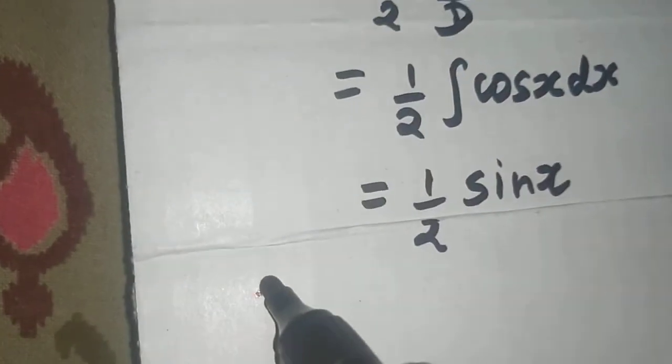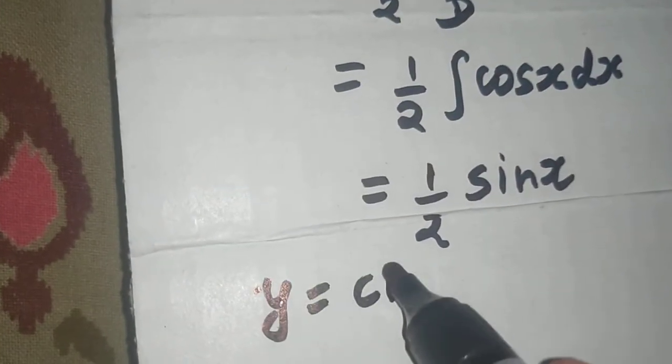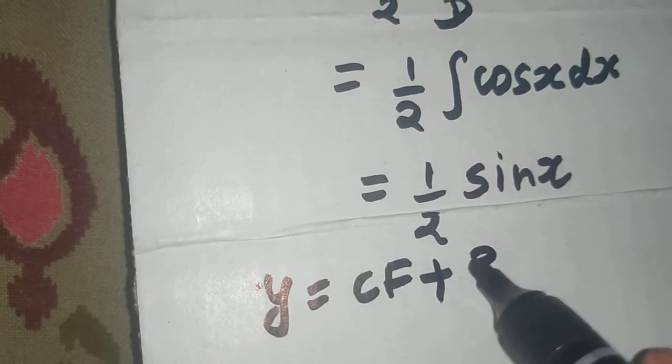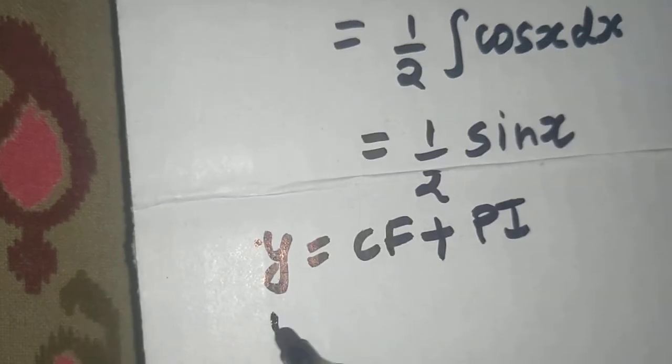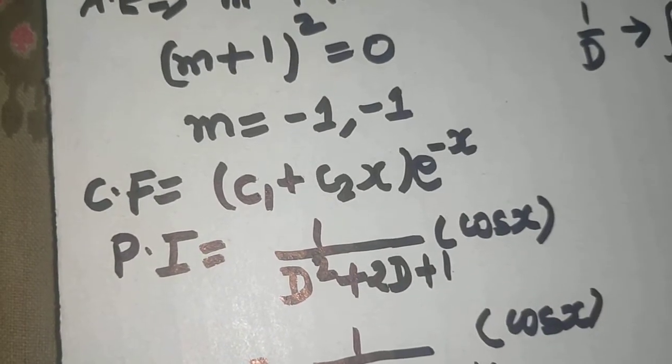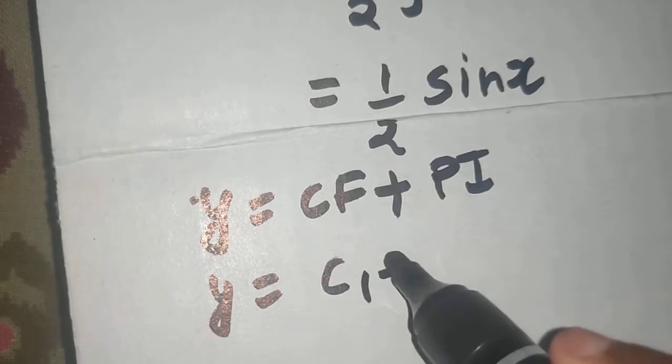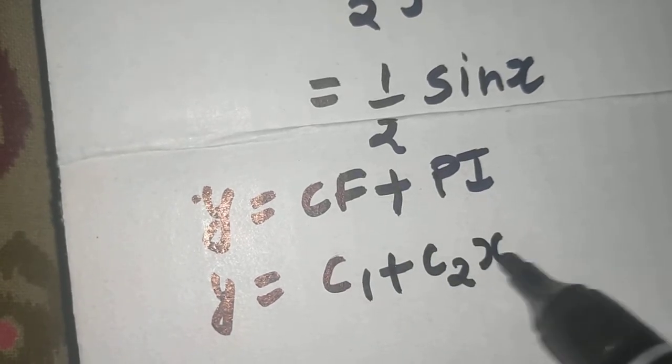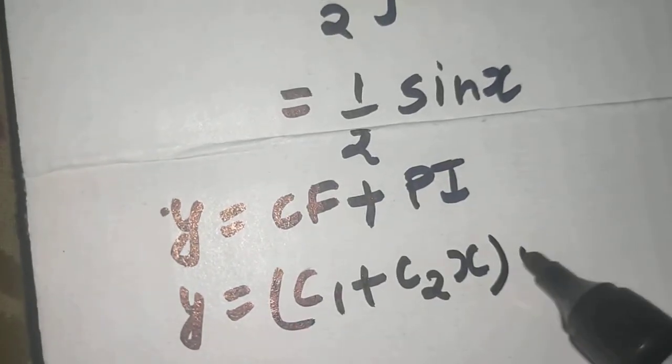So final answer is always CF plus PI. What was your CF? CF was c1 plus c2x e power minus x.